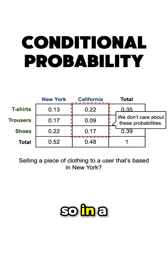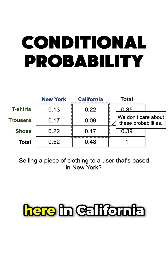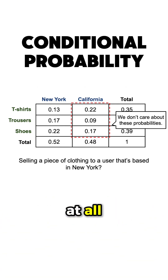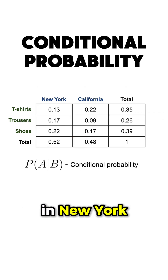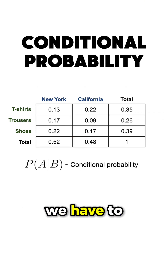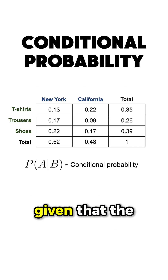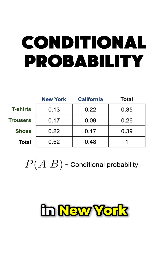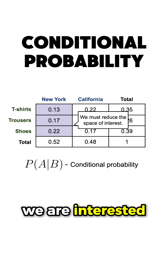So, in a sense, we don't care about those probabilities here in California at all. We just care about these ones in New York. To take this into account, we have to compute — you guessed it — the conditional probability of selling a t-shirt given that the user is based in New York, which is done by reducing the space we are interested in.